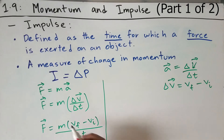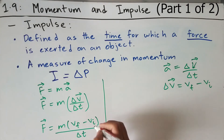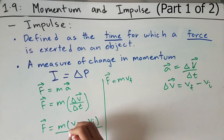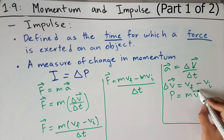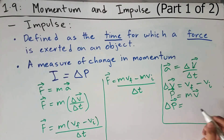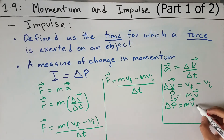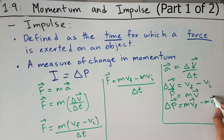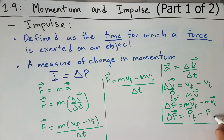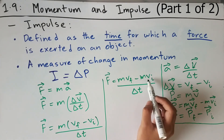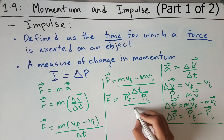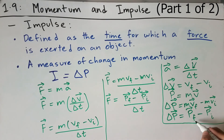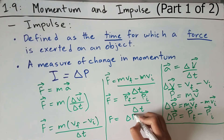In the next step, we distribute m across this term. Multiplying m with each term gives force equals mass times final velocity minus mass times initial velocity, all over delta t. Since momentum equals mass times velocity, a change in momentum means the velocity has changed, giving mass times final velocity minus mass times initial velocity — which is simply final momentum minus initial momentum. So force equals change in momentum over change in time.